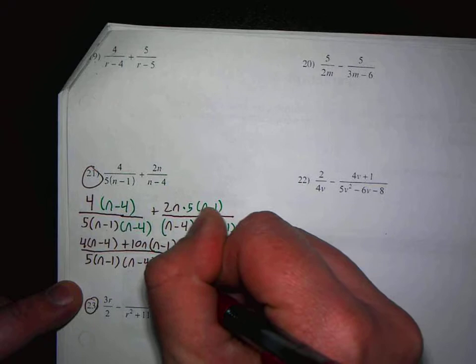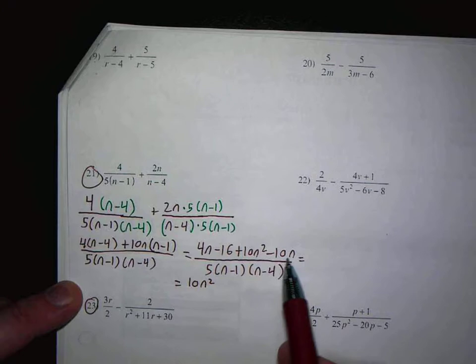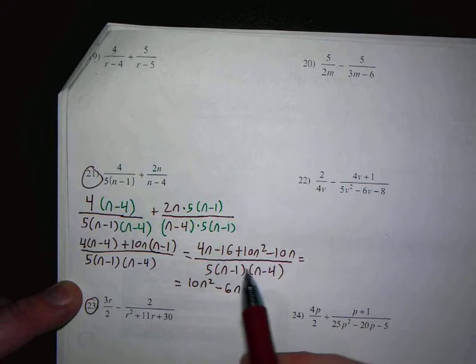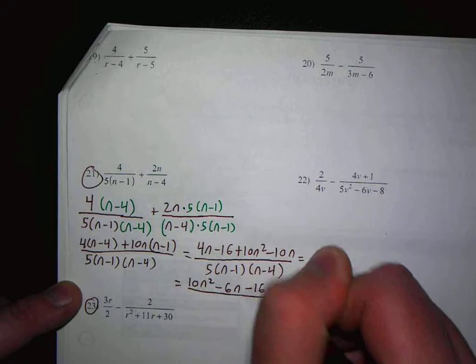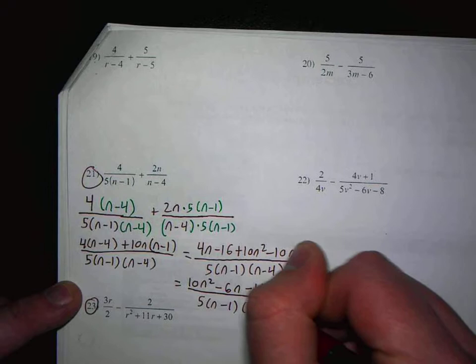And then I have 4n minus 10n, which is minus 6n. And then minus 16, and then minus 16.